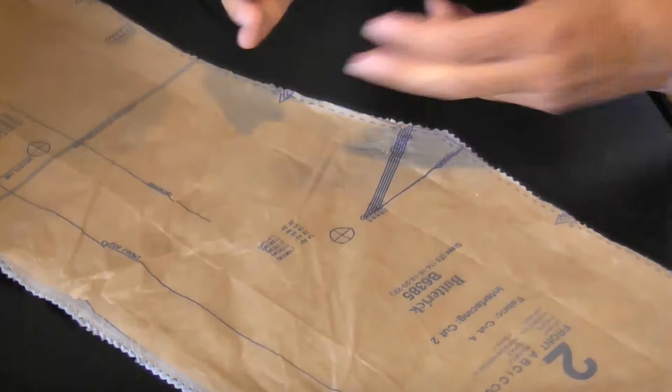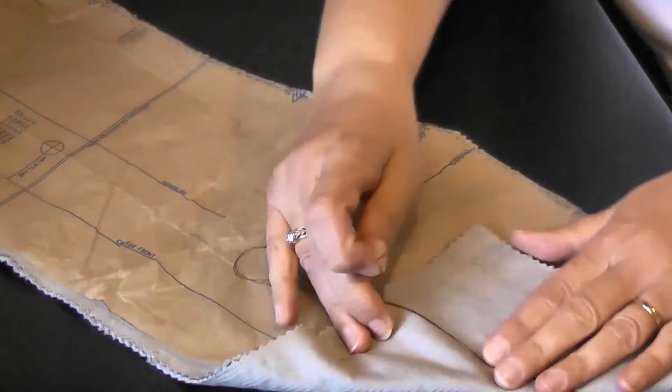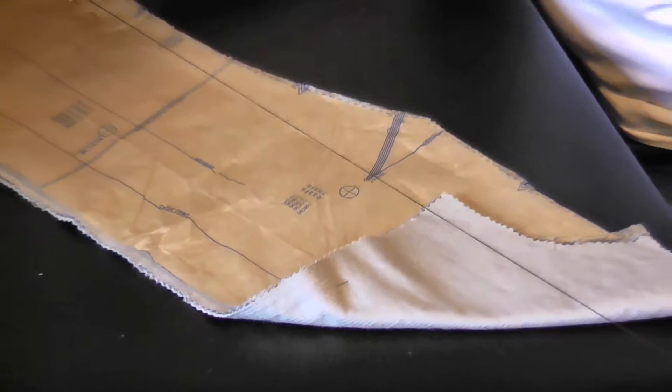So I've just taken a piece of contrasting fabric. I'm using black, because I've got a very pale greyish green here, so that's going to stand out really nicely. I've threaded it through double, and I've just knotted the end, and it's quite a long piece.